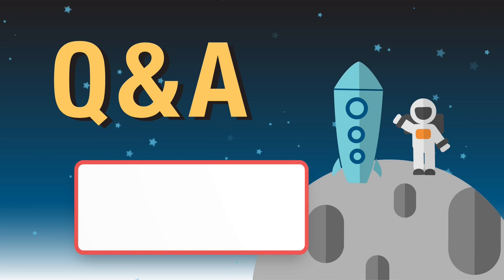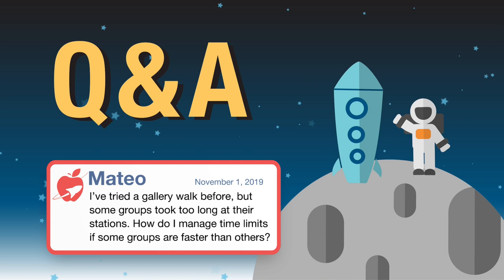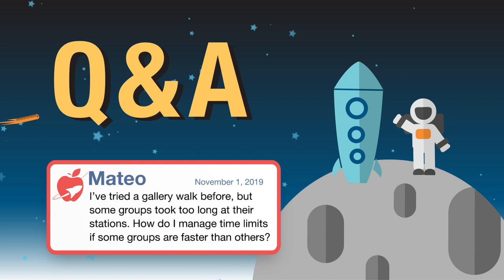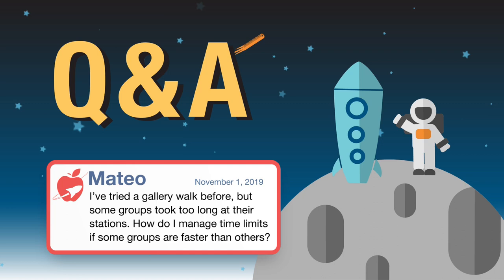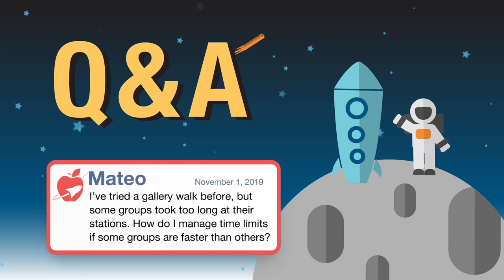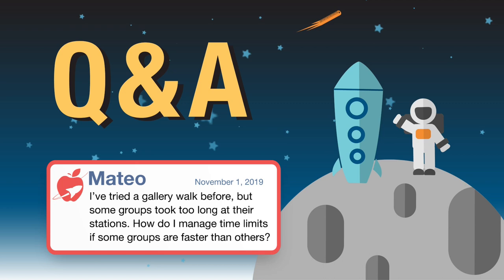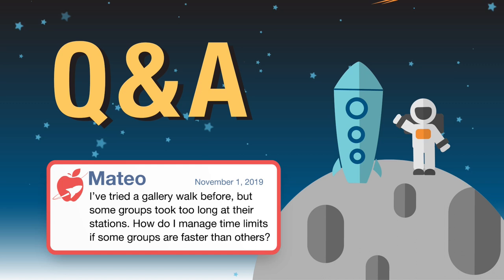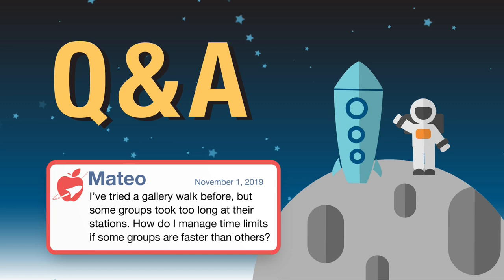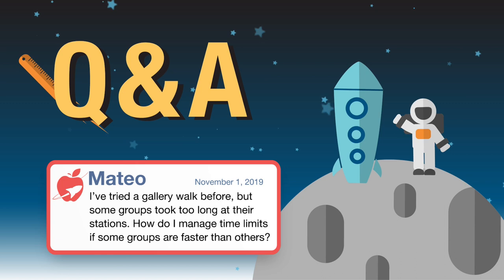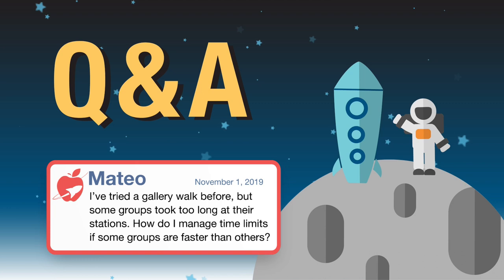Kyle, Mateo wants to know: I've tried a gallery walk before, but some groups took too long at their stations. How do I manage time limits if some groups are faster than others? Kyle: hopefully you're using some sort of timing device, keeping time and telling all groups to rotate after a set period. If some groups are taking a little bit longer, first ask yourself how much longer. If it's only about 30 seconds to a minute, just tack that on to the total time. If it's becoming a major issue, consider pairing students who move quickly with those who move more slowly. If you prefer your current groups, you can also print out the gallery walk materials and give them to slower groups individually so they can have more time to process it later.